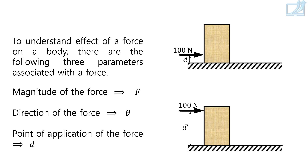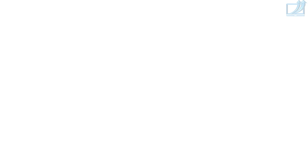The point of application of the force is defined by the distance of its line of action from a reference. Here is a box resting on a horizontal surface with line ABC shown in the diagram. There are infinite points on the line, but we have labeled three: point A, point B, and point C. A 100N horizontally rightward force is applied at point A — magnitude 100N, direction horizontally rightwards, and line of action is line ABC. Because of this 100N applied force, the box is moving rightwards with acceleration 2 meters per second squared.